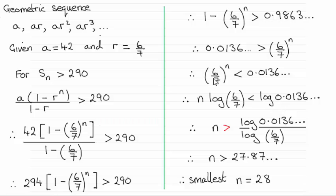So taking logs to both sides then using the power rule here. The log of all of this 6 sevenths power n means that we can bring the n out the front of the log. So I'm assuming you're familiar with that rule. n times the log of 6 sevenths is less than the log of the other side, 0.0136 and so on.